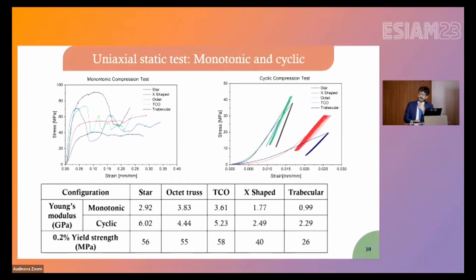Looking at the static test results, the star and the octet truss display a stretch-dominated failure mechanism characterized by sequential collapses, and also exhibit a very high Young's modulus and yield strength compared to the bending-dominated lattices such as the x-shape and trabecular. Interestingly, the TCO, even though nominally categorized as bending-dominated, shows a rather stretch-dominated behavior with multiple collapses and Young's modulus and yield strength comparable to those of the stretch-dominated lattices.